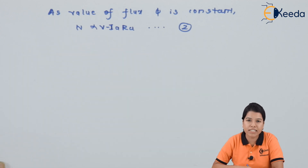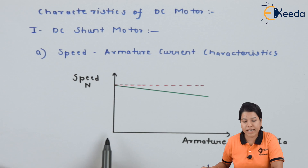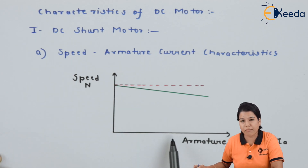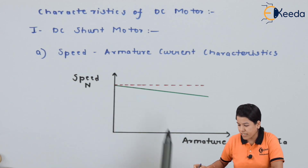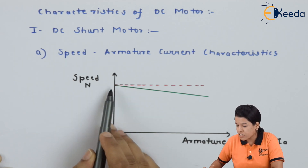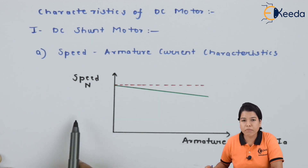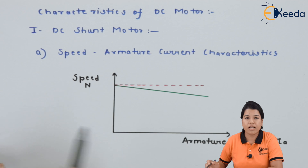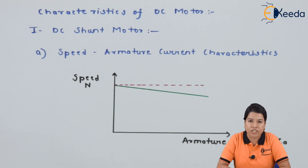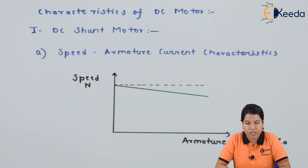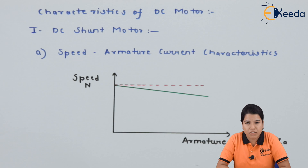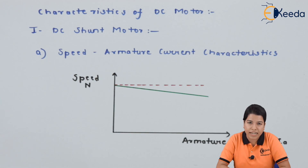Considering this, the characteristic can be drawn as shown. We can see the characteristic of speed versus armature current for DC shunt motor — as the armature current increases, the speed decreases. However, at no-load condition, the term Ia·Ra is very negligible, so the point subtracted from V is also negligible. As V is constant, the speed also remains almost constant. Hence, we can say that the DC shunt motor has almost constant speed.